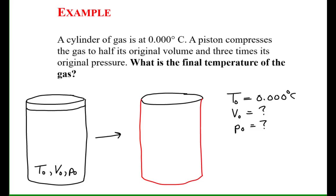The gas transitions to a new thermodynamic state as the piston compresses the gas to half its original volume and three times its original pressure. Let's label these new state variables as T₁, V₁, P₁ for the temperature, volume, and pressure in this new state.